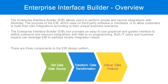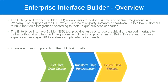What we are going to do is configure these three steps. Get data — where are we going to get the data from? That is something we have to configure. Do we need transformation? If yes, configure that; if no, leave it blank. And then deliver the data — how are we going to send the data to an external system? We have to configure that as well. Once we do these three steps, our EIB is ready, and we will start exchanging information from Workday with an external system.